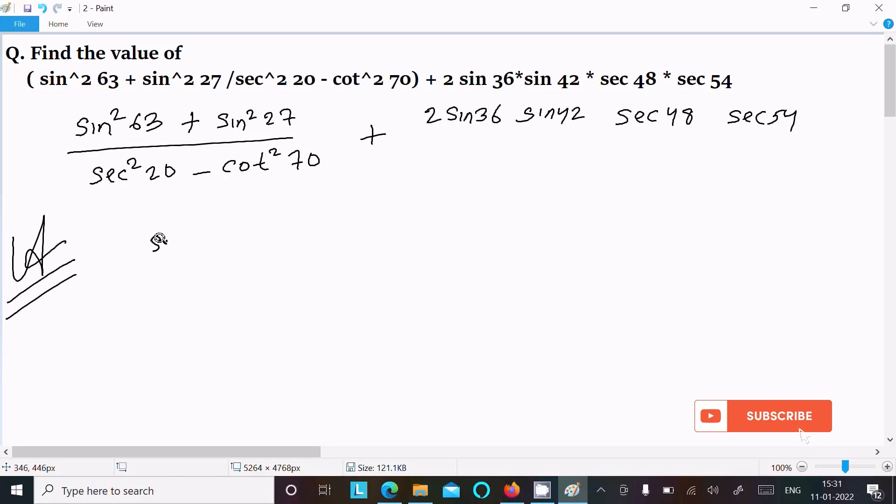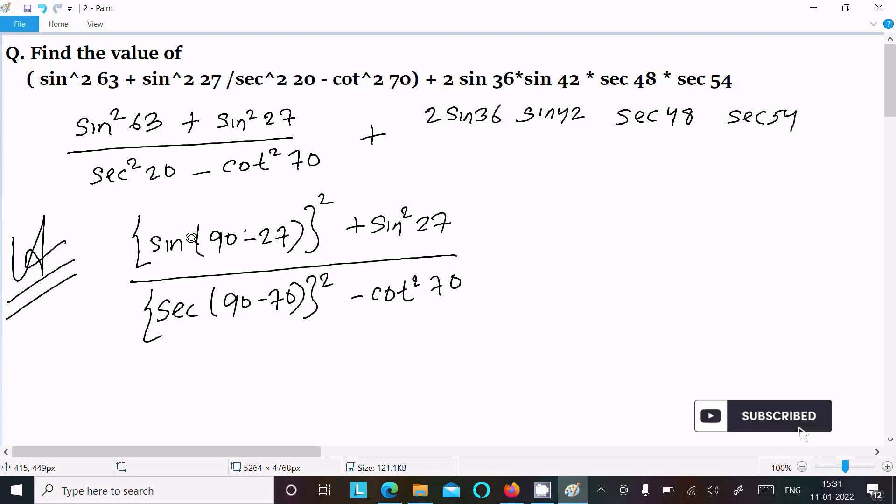So first here we can write sin 63 as sin of 90 minus 27. 90 minus 27 that is equal to 63, now we don't need to change 27. And this we can write sec 90 minus 70 here, cot square 70. So 90 minus 27 that is equal to 63 and 90 minus 70 that is equal to 20.